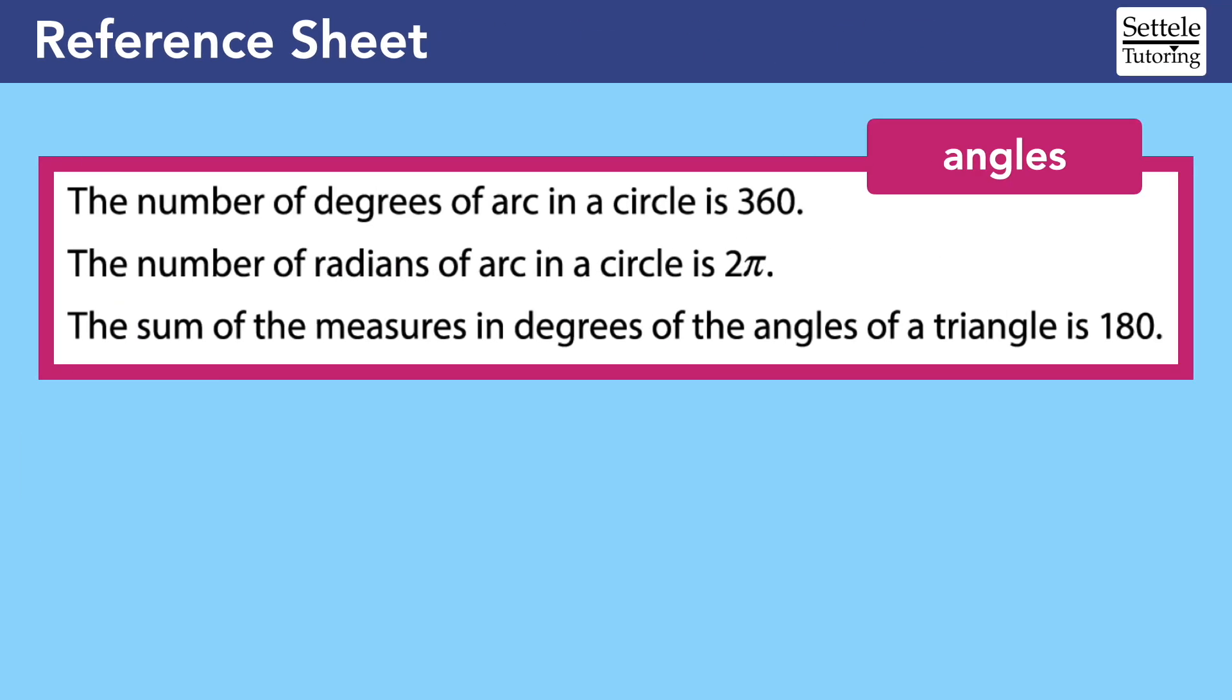Finally, the bottom of the reference sheet gives us some important angle constants. We're told that there are 360 degrees in a circle, that there are two pi radians in a circle, and that there are 180 degrees in a triangle. Again, I think you should already have these facts memorized if you hope to confidently answer most geometry questions.